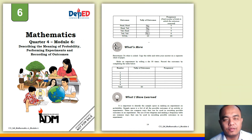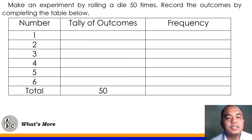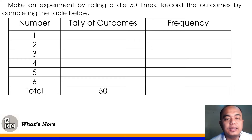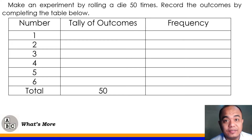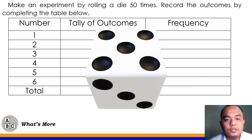Let's proceed to the What's More part of your module. Direction: Make an experiment by rolling a die 50 times and record the outcomes by completing the table below. You are to perform this experiment at home and then record the outcomes on your experiment. For your guidance, I will show to you a sample result for this activity. Your answer there may vary on the examples that I'll be showing you on the screen. Ito yung sample ng ating die.